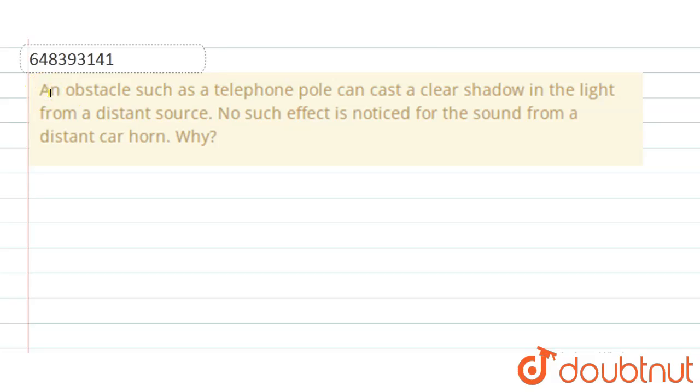Now the question is: an obstacle such as a telephone pole can cast a clear shadow in the light from a distant source. No such effect is noticed for the sound from a distant car horn. Why?